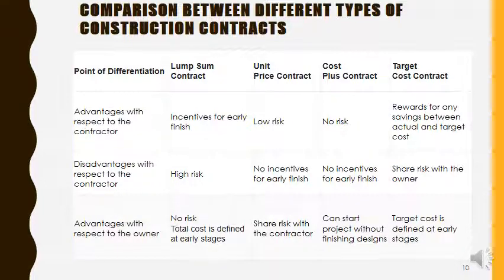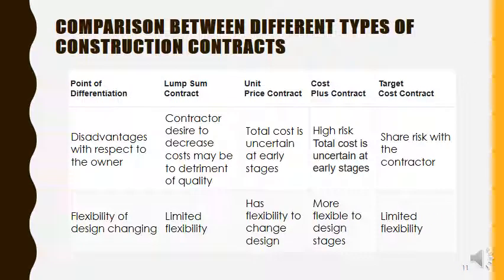Disadvantages with respect to the contractor: lump sum is highly risky; target cost contract carries risk shared between contractor and owner. Advantages with respect to the owner: in lump sum, no risk for the owner; in unit price, risk is shared; in cost plus, the project can start without finishing the design; in target cost, the cost is defined at an early stage. Disadvantages for the owner: in lump sum, the contractor may decrease quality to make profit; in unit price, total cost is uncertain at the early stage; in cost plus, high risk and total cost is uncertain.